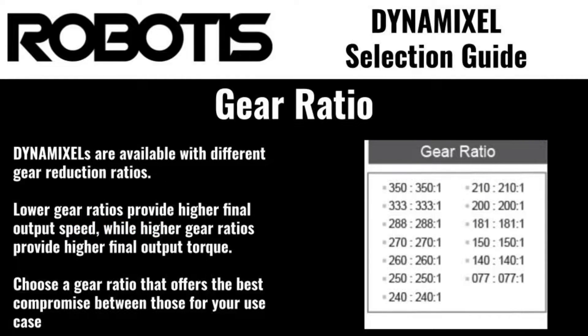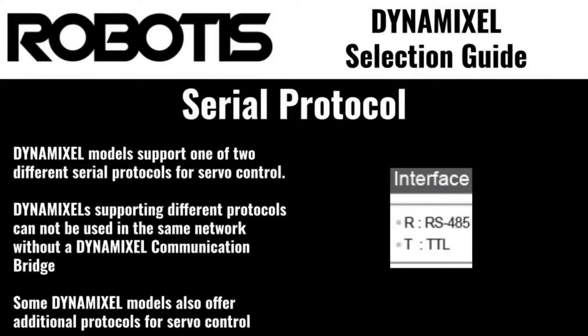The final two specifications common amongst all Dynamixel actuators are the reduction ratio and serial protocol. The reduction ratio measures how much of the rotational speed from the internal motor is converted into torque at the output horn — higher numbers mean more output torque but lower output speed. The serial protocol specifies which of two available communications protocols is supported: T indicates TTL communications while R indicates RS-485 support.